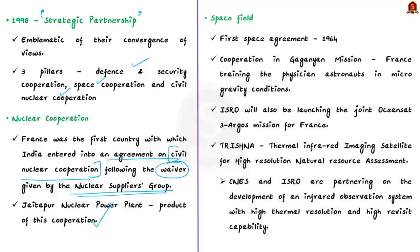Coming to the space field, France and India share robust ties. The first space agreement between France and India dates back to 1964. Notable collaborations include cooperation in the Gaganyaan mission — India's proposed first manned space mission — for which France will be training physician astronauts in microgravity conditions.